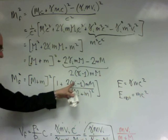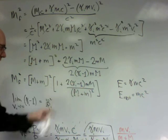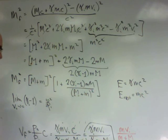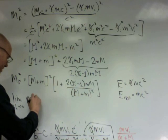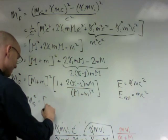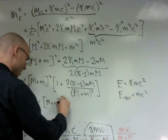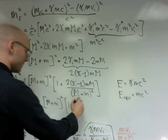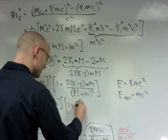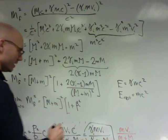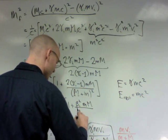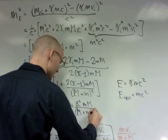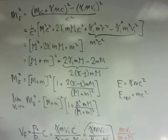So this is just a 1 half beta i squared. And that half cancels that half. So the limit as velocity goes to zero of the final mass squared is just m plus m squared times 1 plus beta squared m m over m plus m squared.